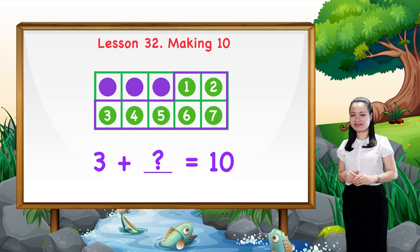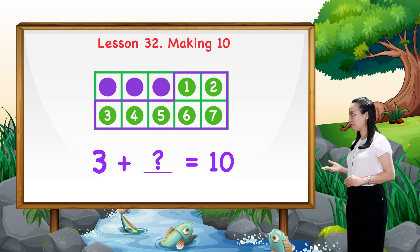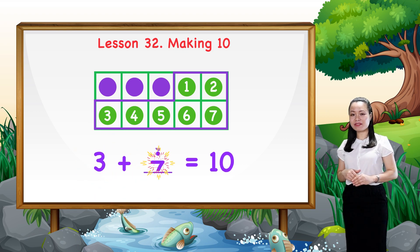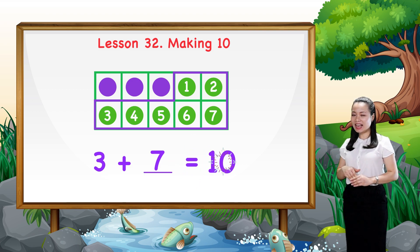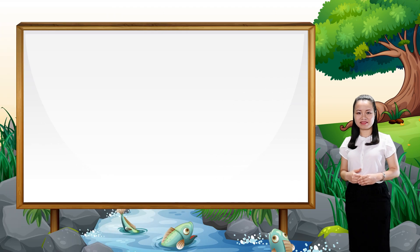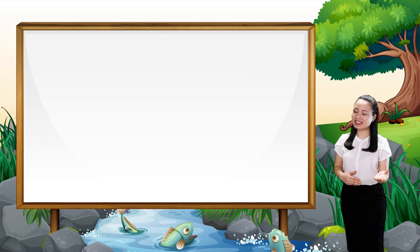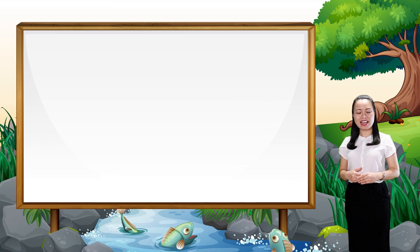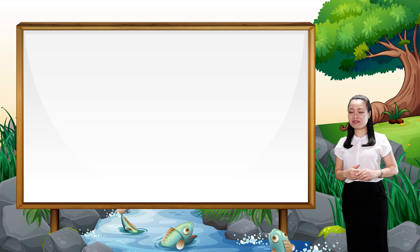Therefore, three plus seven equals ten. I hope you understand the lesson. Now, it's time to have some practice.